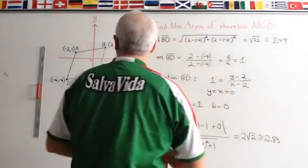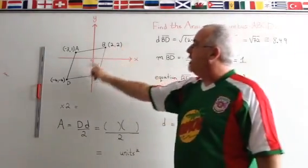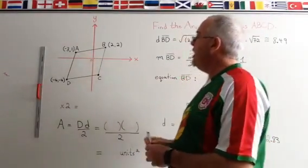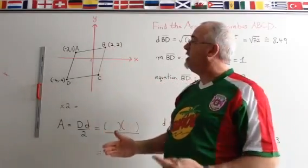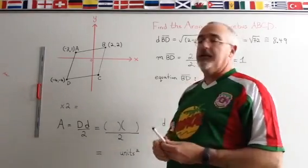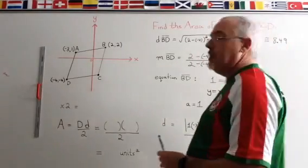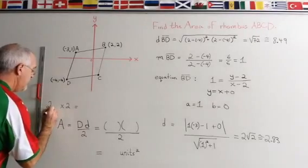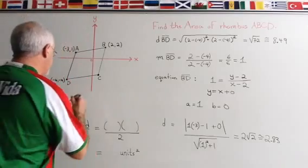We're done with the distance between a point and a line formula. When I did this formula, I was using the equation for the diagonal BD. And the point that I was using was point A. But that gives me the distance between point A and the diagonal, which is half of the distance between point A and point C. I need the distance between point A and point C because that represents my small diagonal for this rhombus. So I am taking my 2.83 and I am multiplying it by 2 to get small d. And that gives me approximately 5.66.